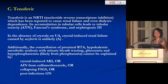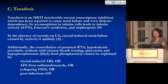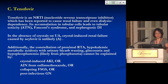Tenofovir is an NRTI well known to cause renal failure and even dialysis dependence. It accumulates in tubular cells, leading to ATN. The other important feature in this clinical case is the presence of Fanconi syndrome, and it can also cause nephrogenic DI. Because of that constellation, you want to focus on it when answering board questions — they won't give extra information unless it points to a specific diagnosis.